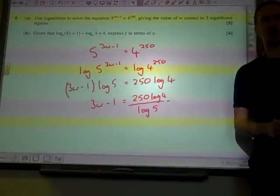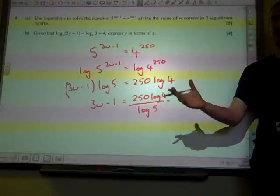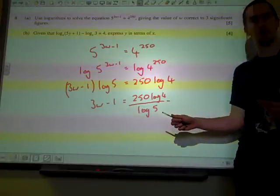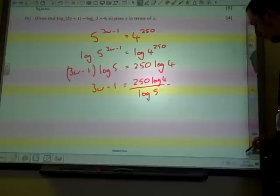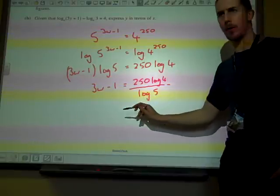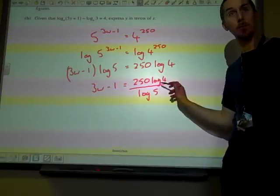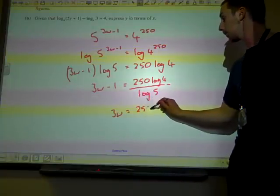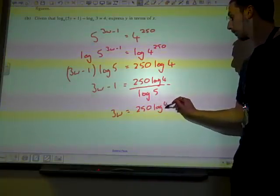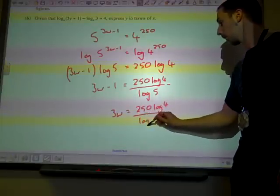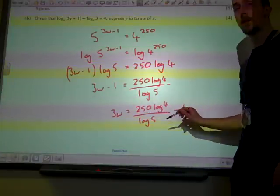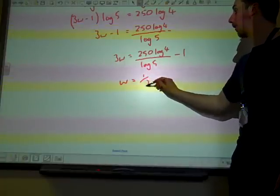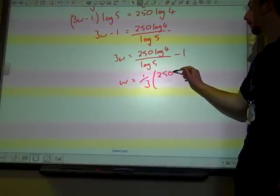And it's helpful - log 4 and log 5 are going to be long, kind of messy decimals, so it's better to leave them in this form until the end, when we can put them straight into a calculator in one go. So we'll rearrange this again. We're going to add 1. And then we're going to divide everything by 3 to get w on its own. So w is 1 third of 250 log 4 over log 5.